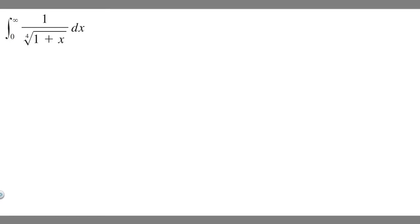In this problem, we're told to evaluate the improper integral from 0 to infinity of 1 over the 4th root of 1 plus x dx. In order to evaluate an improper integral like this, what we're going to want to do is rewrite it as a limit.